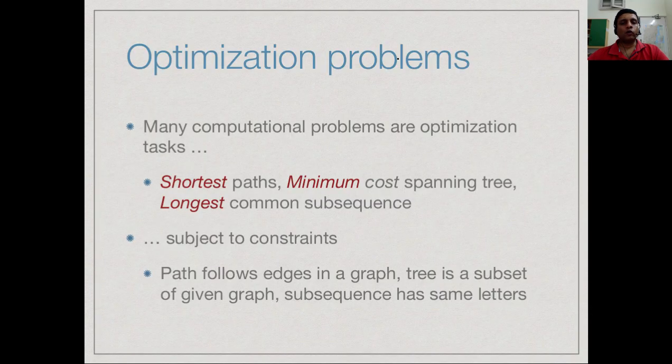The kinds of problems we have looked at so far are largely optimization type tasks. We are looking for shortest paths in a graph or trying to identify the minimum cost spanning tree or looking for the longest common subsequence. We are trying to optimize some quantity - the length of the path, the cost of the tree, or the length of the subsequence - and this optimization takes place subject to a constraint.